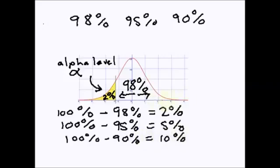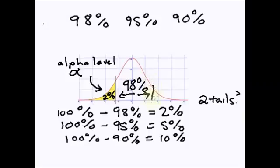So this is for a one-tail test. What happens when you have 2 tails? Well, these percentages are going to be divided into 2. If I have 98% in the center and I have 2 tails, the 2 tails are equal — so there is going to be 1% here and 1% on the other side.